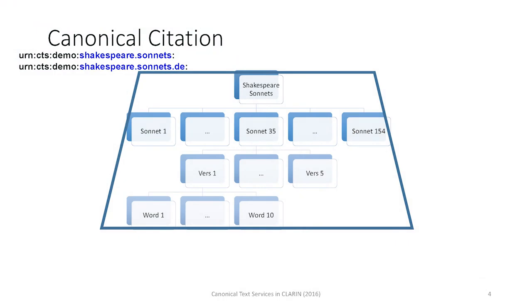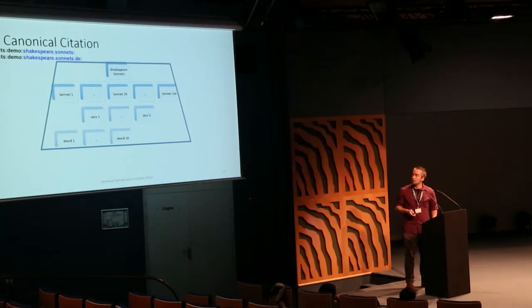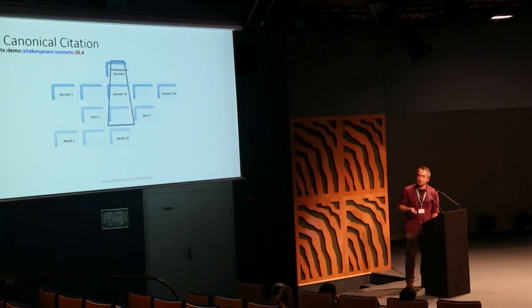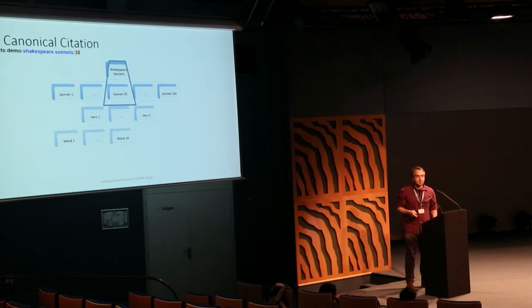CTS URNs can be used to refer to text passages that are the complete document. You can also refer to each of the text parts. This can be done on any citation level, so it's a layered system basically.